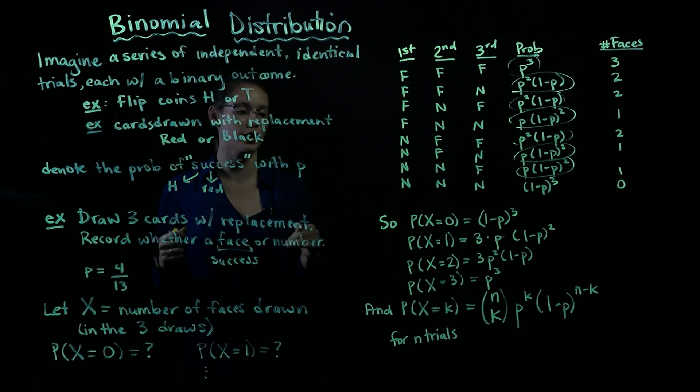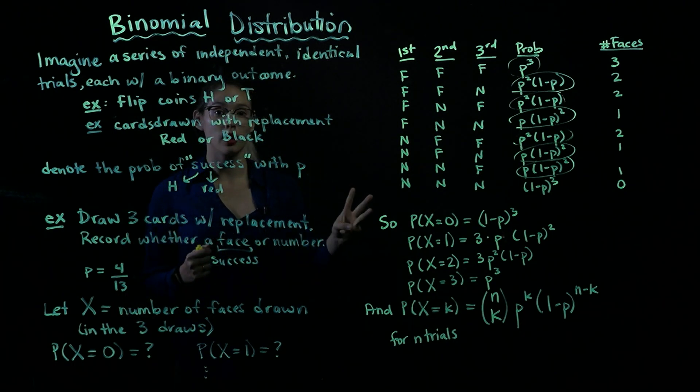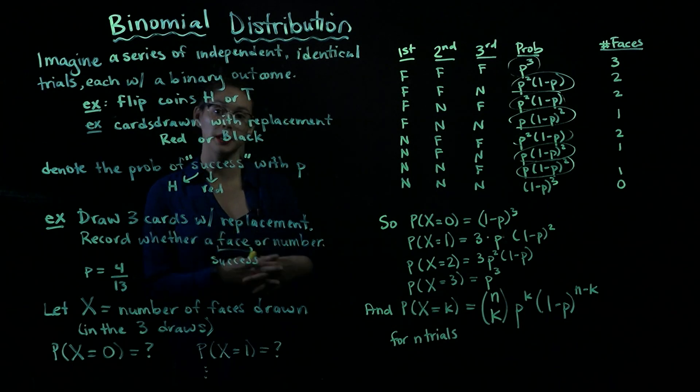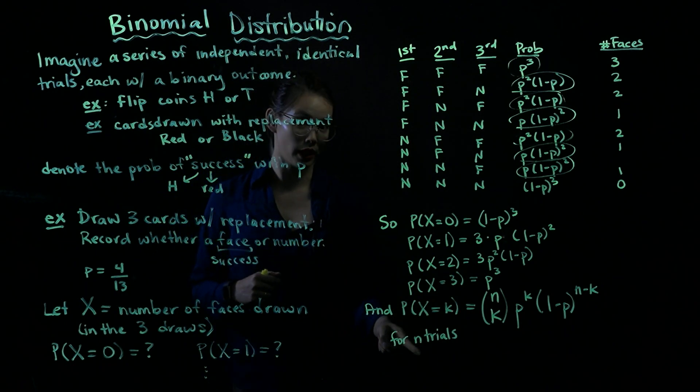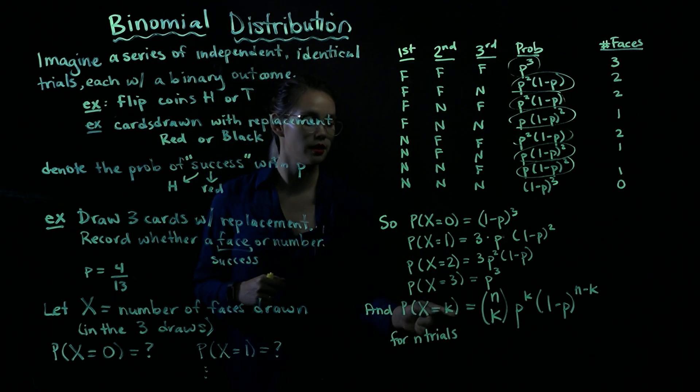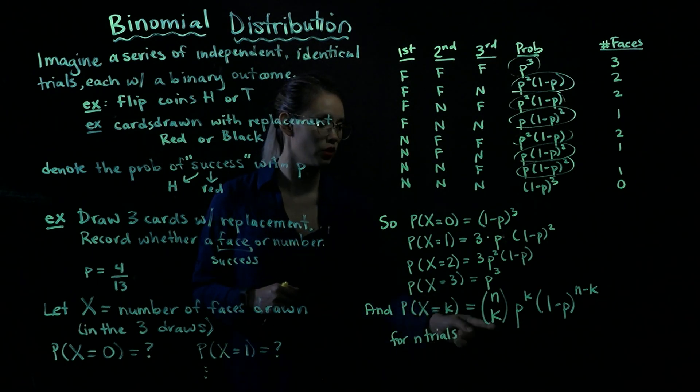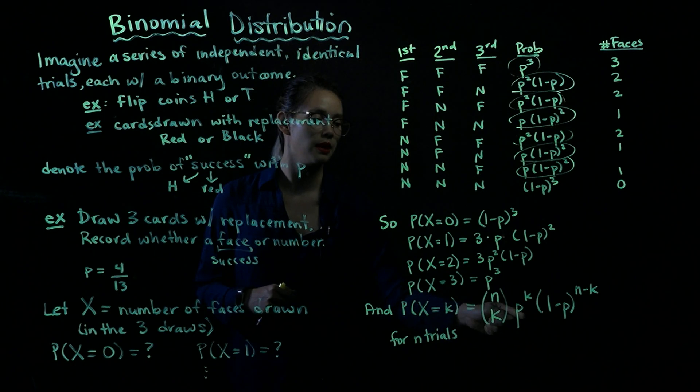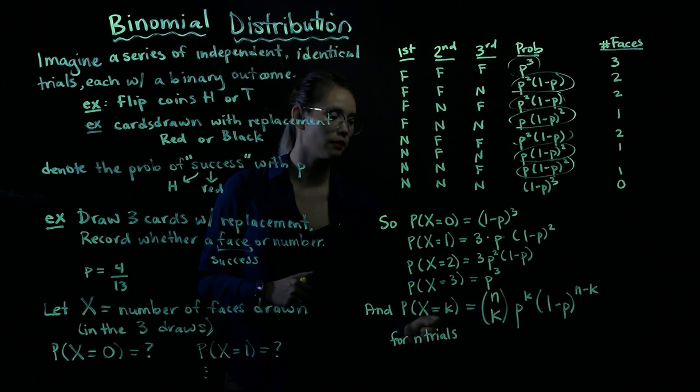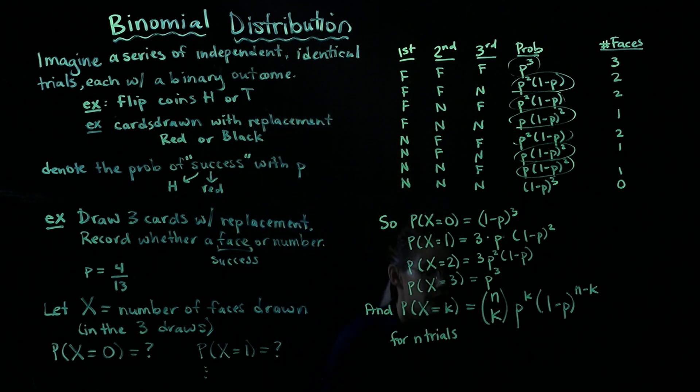Okay, so if we want to write this more generally and not just think about three cards, if we wanted to think about, like, 20 cards, we could go ahead and do that. So we can just say, let's have n trials. The probability that our random variable X takes on the value K is going to be equal to n choose K times P to the K times one minus P to the n minus K. So let's break down what this means.